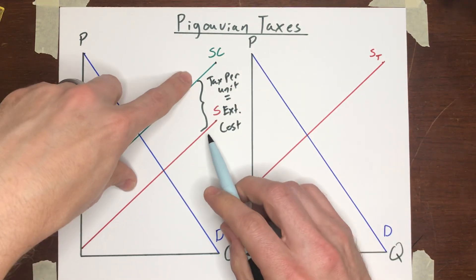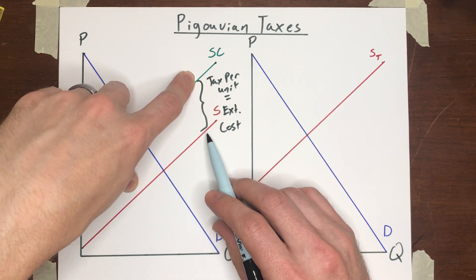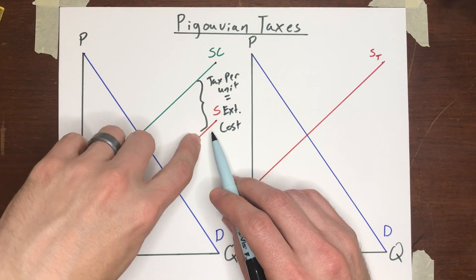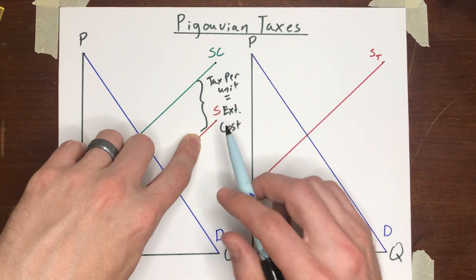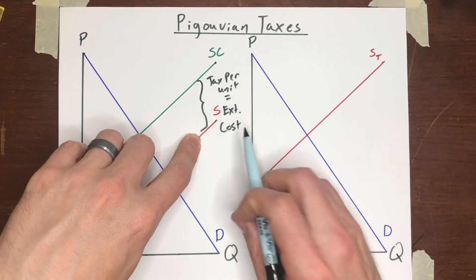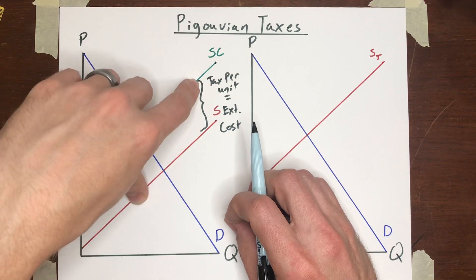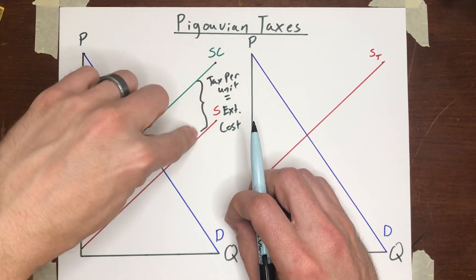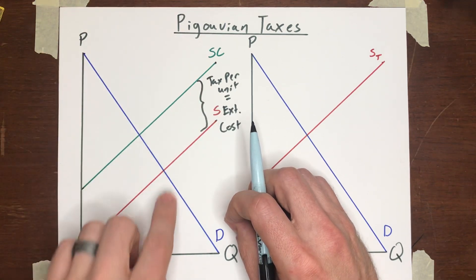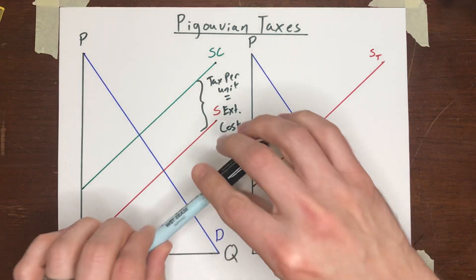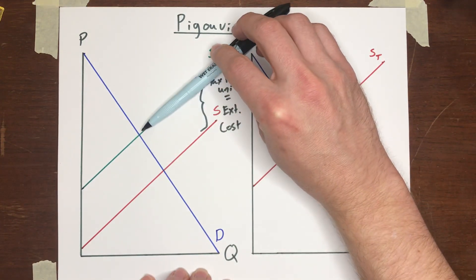So if you know what that external cost is that every transaction is imposing on third parties, on bystanders, then you could just go to the sellers in this market and say, listen, every time you make a sale we are going to tax you whatever that amount is. Maybe it's $50 per unit in external costs. If that external cost was $50 a unit and you then tax at $50 a unit, you would see this supply curve shift up by exactly $50 per unit.